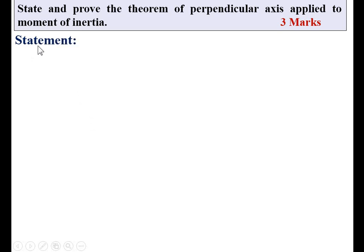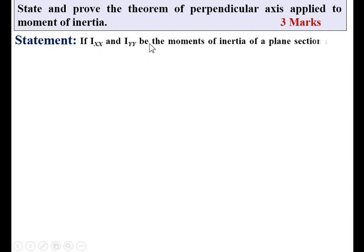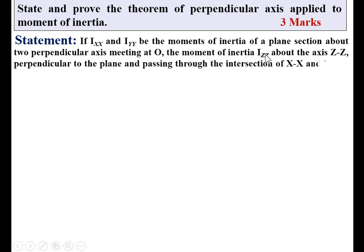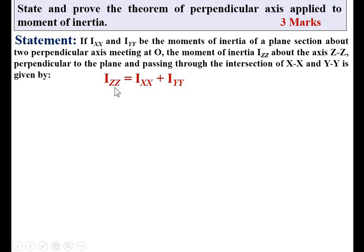First, the statement of the perpendicular axis theorem: if I_XX and I_YY be the moments of inertia of a plane section about two perpendicular axes meeting at point O, then the moment of inertia I_ZZ about the axis ZZ perpendicular to the plane and passing through the intersection of XX and YY is given by I_ZZ = I_XX + I_YY. Sometimes I_ZZ is known as the polar moment of inertia.